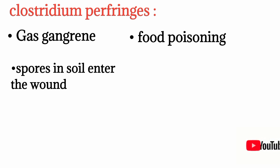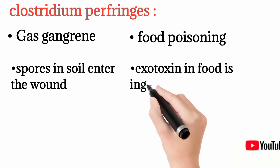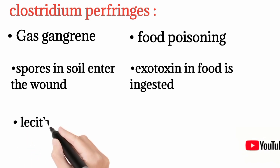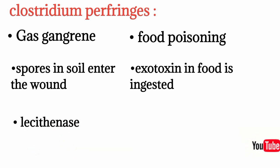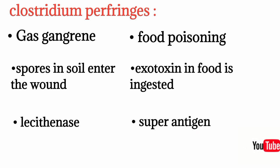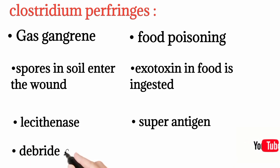For food poisoning, symptoms are caused by exotoxin ingested from contaminated food. The mechanism of gas gangrene involves lecithinase, an enzyme produced by Clostridium perfringens that causes the necrosis. Food poisoning is associated with a superantigen that overstimulates the immune system.